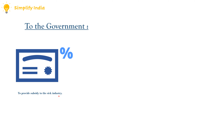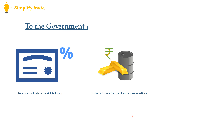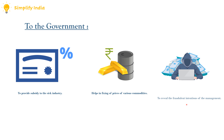From the point of view of the government, the first advantage is to provide subsidy to sick industries — cost audit helps to ascertain whether a particular industry needs government subsidy in order to develop. The next advantage is that it helps in fixing prices of various commodities, as cost audit provides reliable data to the government for settling prices. Finally, cost audit helps to reveal fraudulent intentions, thus helping to ensure a fair market in the country.